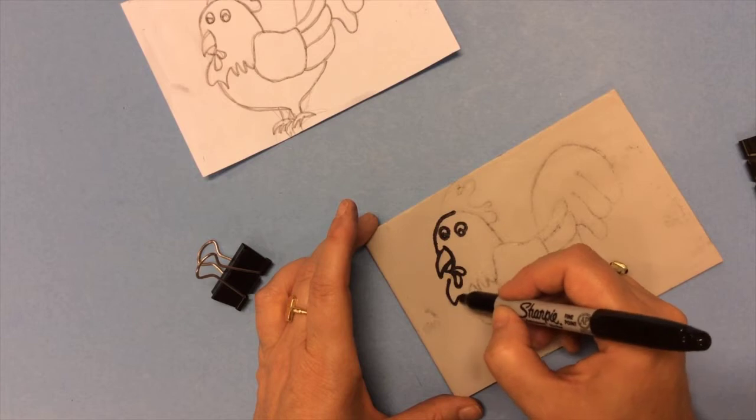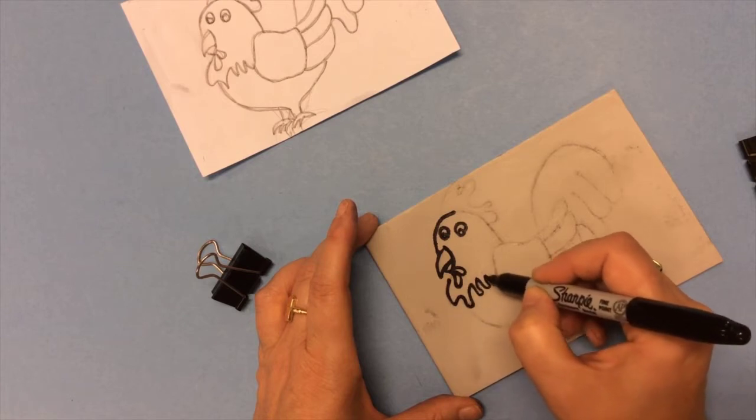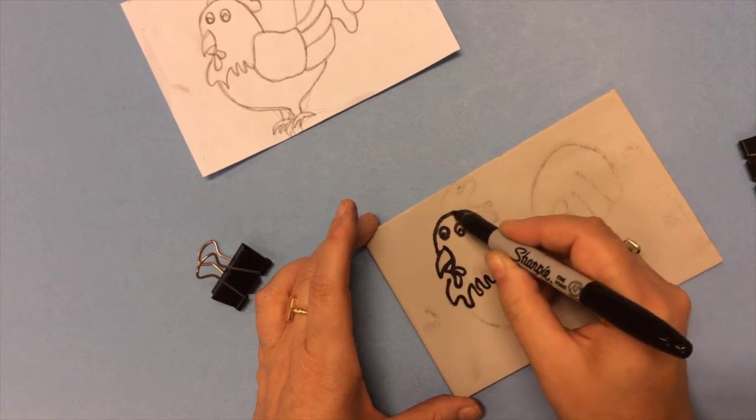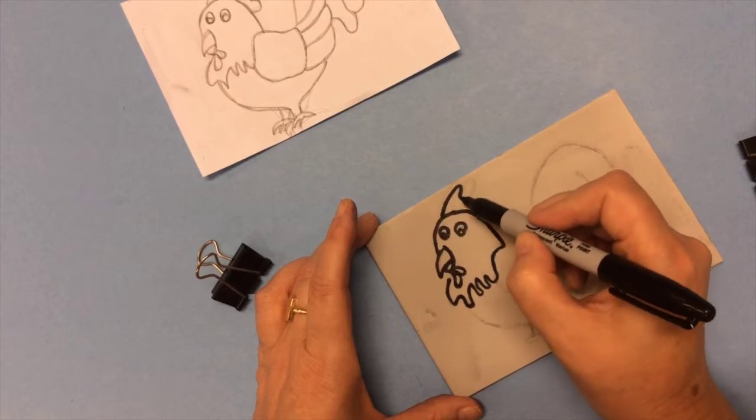I would use the Sharpie instead of a zebra pen. For some reason the Sharpie just works better on the lino block. So get all those details because we're almost ready to start carving.